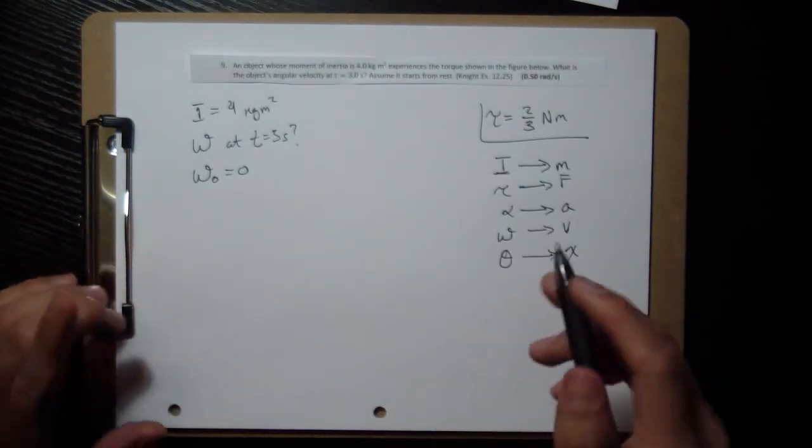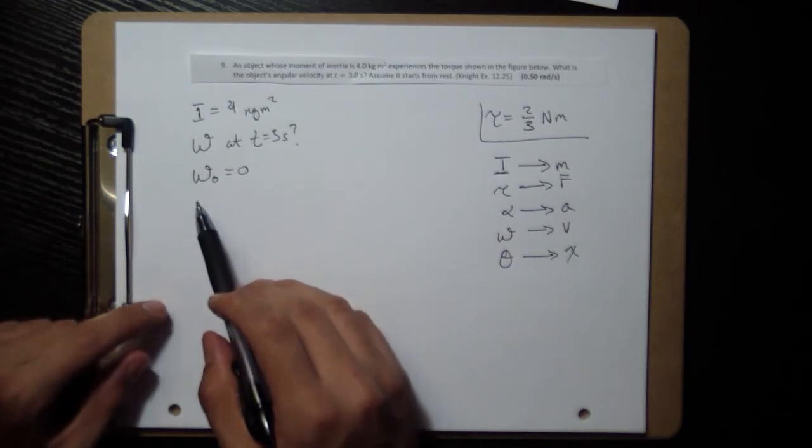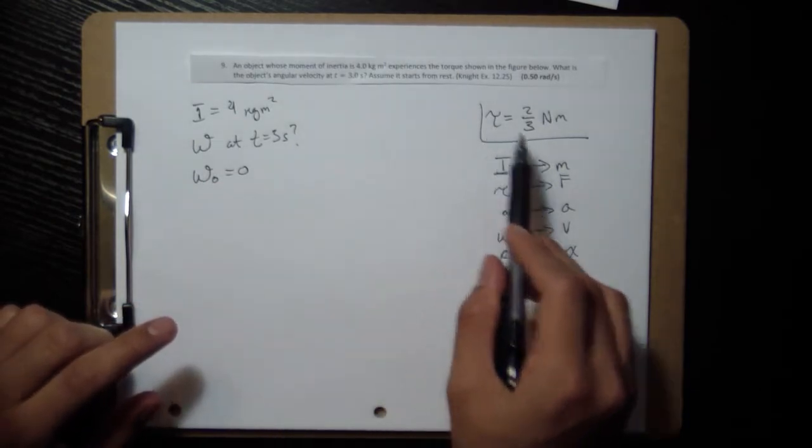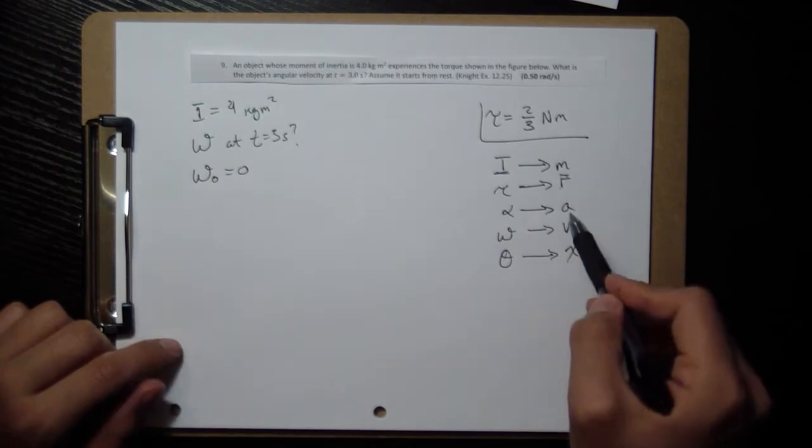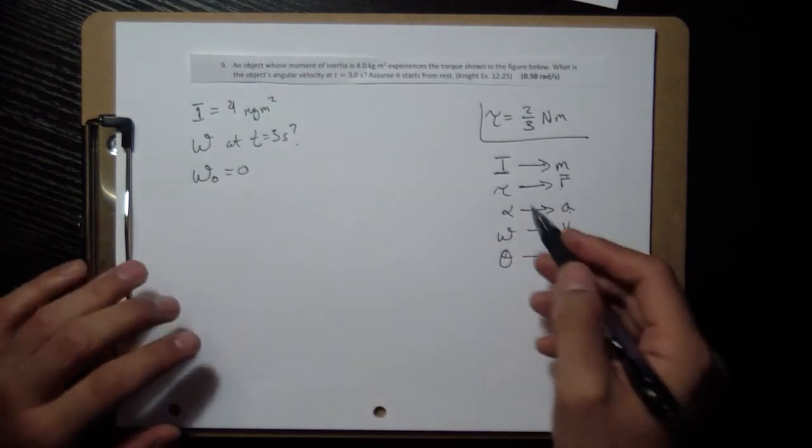And so if I have these omegas, I have velocities, and I have torque, which means that I'm going to have force of the mass. This is going to let me calculate the acceleration. And that relationship is also the same.